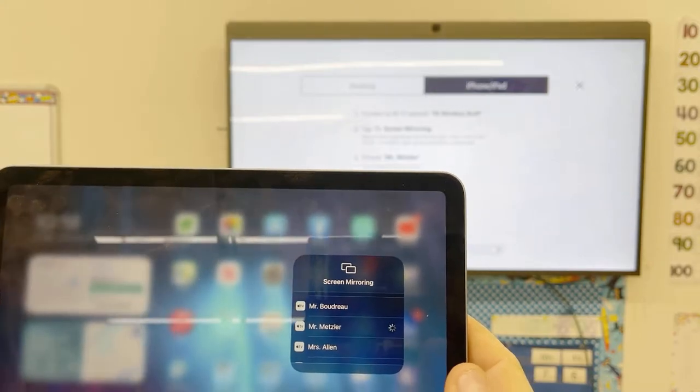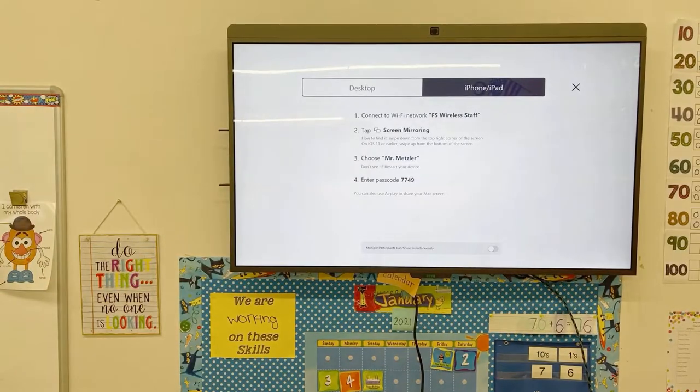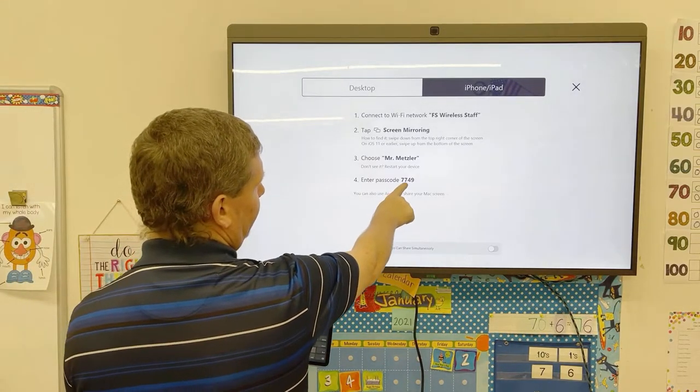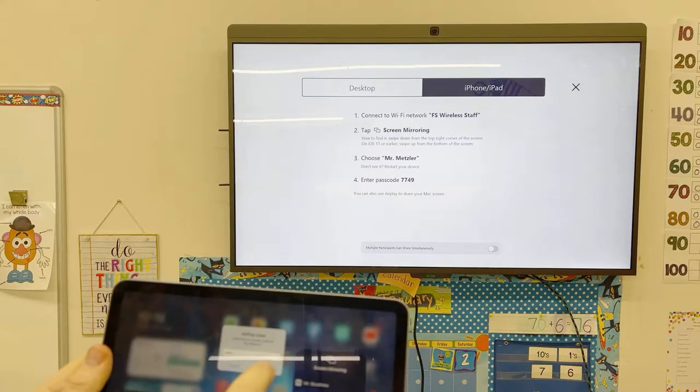It's going to pop up in just a second asking for a passcode right there. You'll see right here on the TV, it gives that 7749 as the passcode. I'm going to put that in. I'm going to hit OK. It'll take just a second.